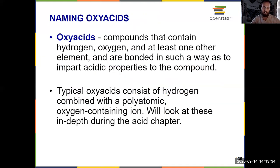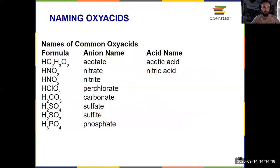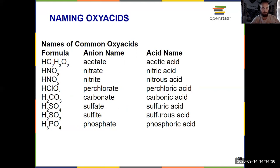Many acids are also oxy acids, which builds on the oxyanions discussed in 2.6. Oxy acids have hydrogen, oxygen, and one other element — the polyatomic ion is part of the acid itself. These are even easier because we don't include hydrogen or hydro at all. We start with the root name of the atom in the polyatomic anion: if that polyatomic was previously an -ate, it becomes -ic; if it was previously an -ite, it becomes -ous. Then we add the word acid at the end. So nitrate becomes nitric acid, and nitrite becomes nitrous acid.